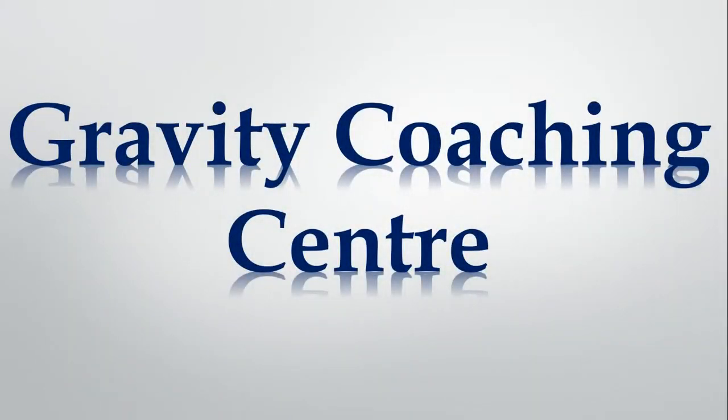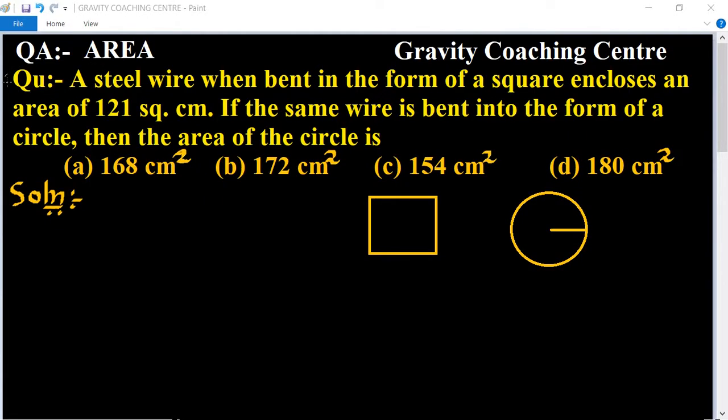Welcome to our channel Gravity Coaching Center. Area question: A steel wire when bent in the form of a square encloses an area of 121 square centimeters. If the same wire is bent into the form of a circle, then the area of the circle is what?